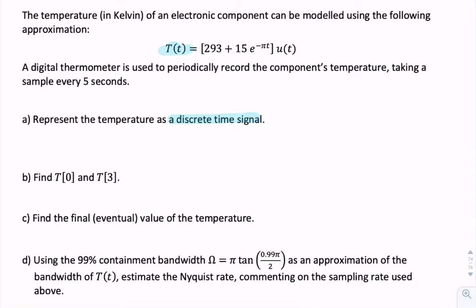So a discrete time signal would be a function of n. So somehow we need to replace t with n times uppercase T. Let's call it Ts to represent the sampling period.